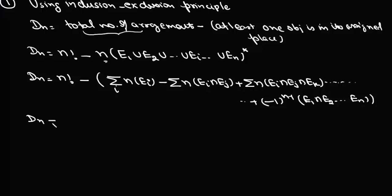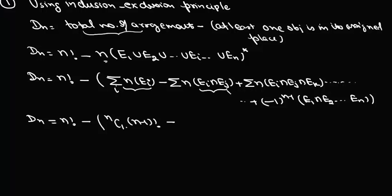Now D(n) = n! minus: first, the summation of |Ei| — we select one element from n in C(n,1) ways and the remaining n-1 objects arrange in (n-1)! ways; minus C(n,2)·(n-2)! for two objects in correct positions; plus C(n,3)·(n-3)! for three objects in correct positions, and so on.